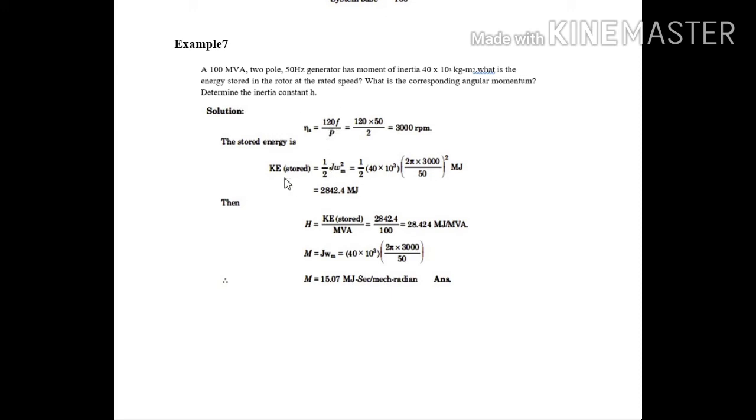For that, we know the formula for kinetic energy stored. It is given as 1 by 2 J omega square M. J is the moment of inertia. Omega is the angular mechanical speed. First of all, we have to convert this into the equivalent electrical speed.